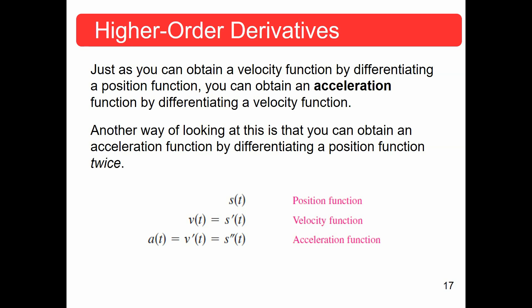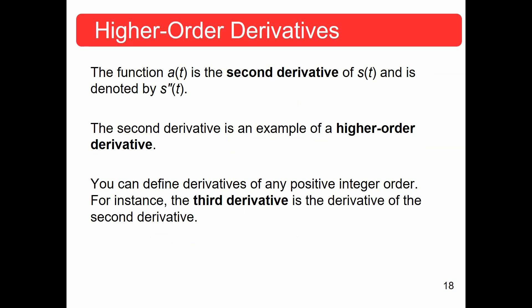Another way of looking at this is that you can find the acceleration by differentiating the position twice. So the acceleration function a is actually the second derivative of the position, and it's denoted by s double prime. Now, we don't say s double prime, we just say second derivative.